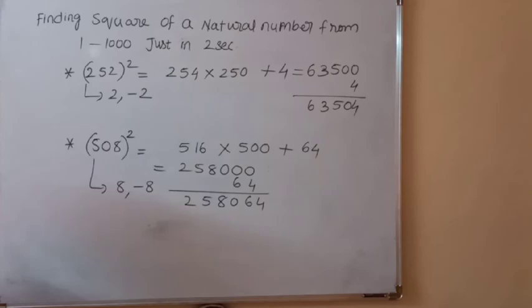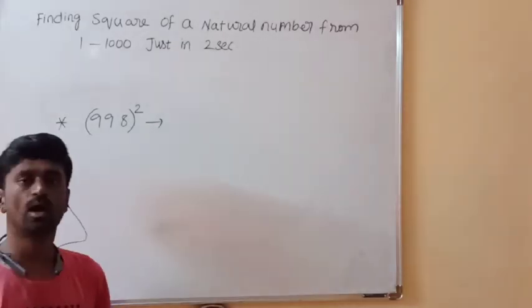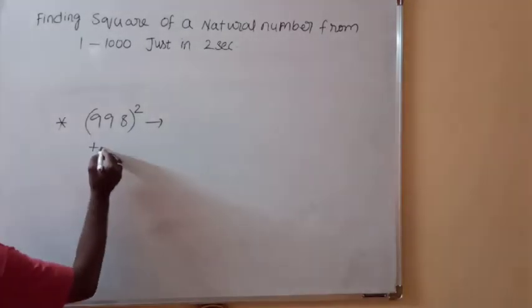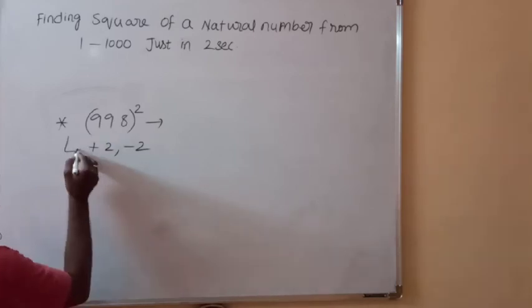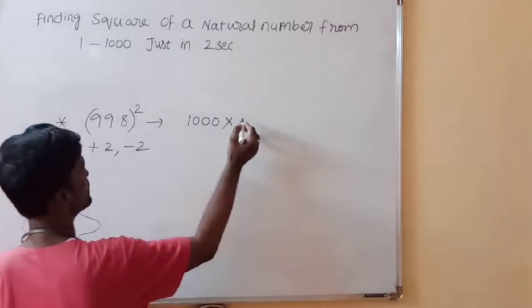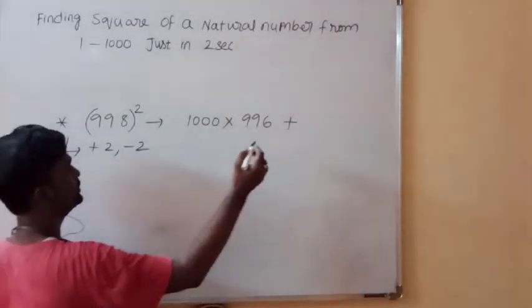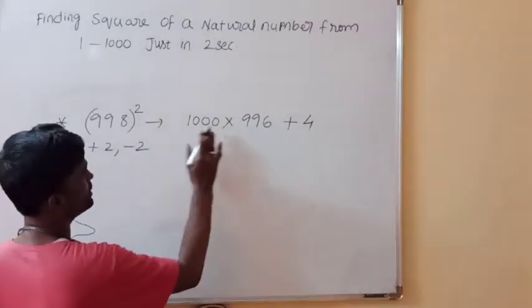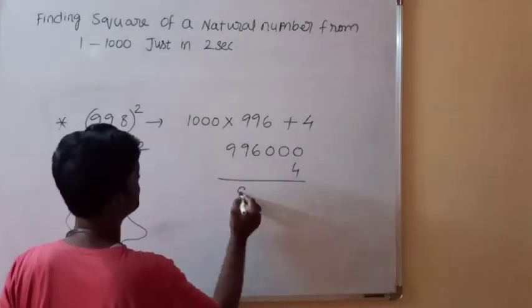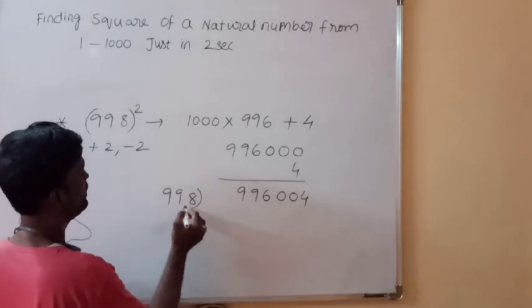For 998 square, add and subtract 2 because 998 plus 2 is 1000. So 998² = 1000 × 996 + 2² = 996000 + 4 = 996004. So 998 square is 996004.